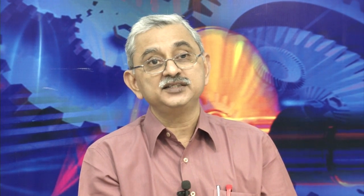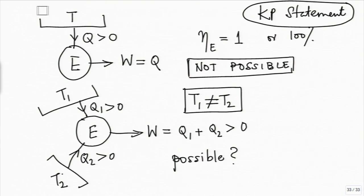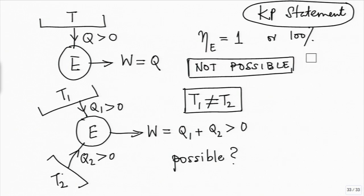If there is no heat interaction, T1 equals T2, and T1 equals T2 would make this perfectly equivalent to the single-reservoir case, because if these two reservoirs are at the same temperature, we might as well combine them and say we have just one reservoir. That question has already been answered by the Kelvin-Planck statement: this is not possible. But is the two-reservoir case possible?